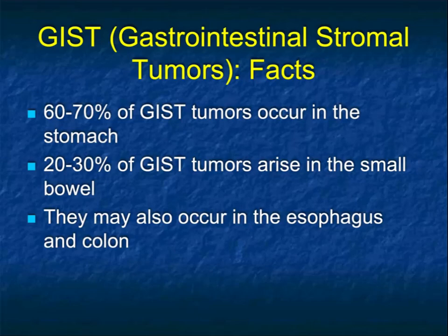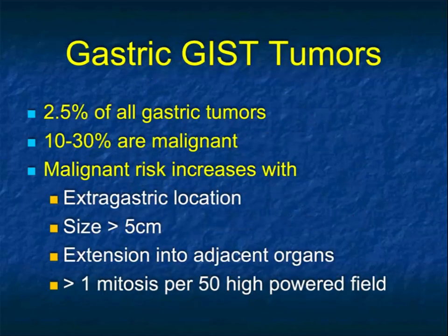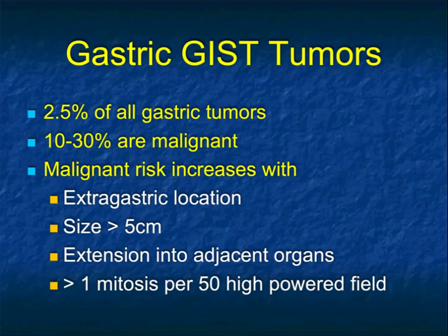The third tumor type is the GIST tumor, and we're seeing more of these now — more GIST tumors of the small bowel and more of the stomach. Two-thirds of GIST tumors arise in the stomach; about a third occur in the small bowel, but they can occur anywhere from the esophagus to the anal region. They arise from a common precursor cell and display spindle cell type characteristics. They are CD117 protein positive, CD34 protein positive, NS100 and Desmin positive though less frequent. They make up about 2.5% of gastric tumors, and between 10 and 30% are malignant. Malignancy typically increases with size — over 5 cm they're typically always considered malignant.